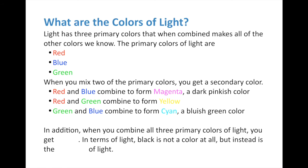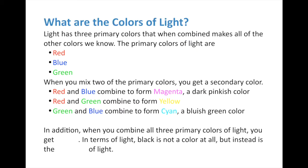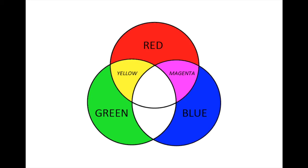Now let's mix our primary colors of red, blue, and green to create some secondary colors. The first is red and blue: whenever we combine red and blue we get magenta, which is a dark pinkish color. You might think red and blue make purple - well, magenta is kind of a purple, and remember we're talking about colors of light actually mixing together. Go ahead and color in the intersection of the red and blue circles with magenta. Next, red and green combine to form yellow - go ahead and label and color that in.